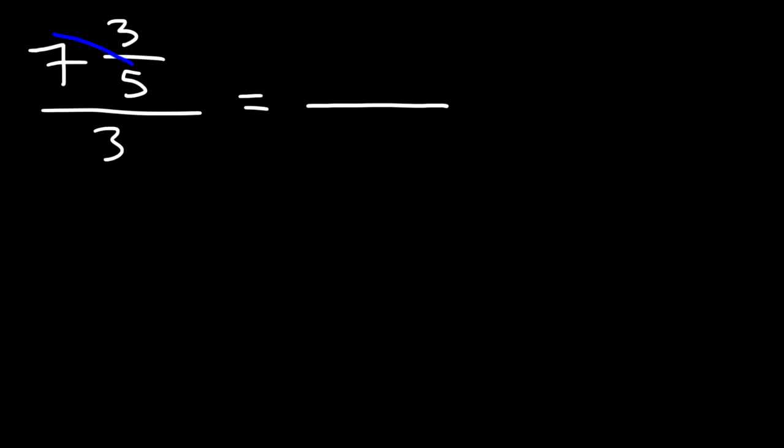So first, let's multiply 7 times 5, which is 35, and we're going to add 3 to that. So that's 35 plus 3, which is 38. And since the denominator is 5, it's going to be 5 for the improper fraction. And so we're going to divide that by 3 over 1, or simply 3.